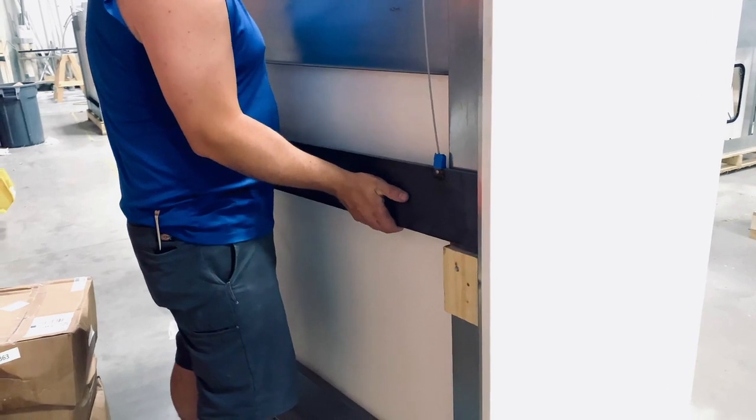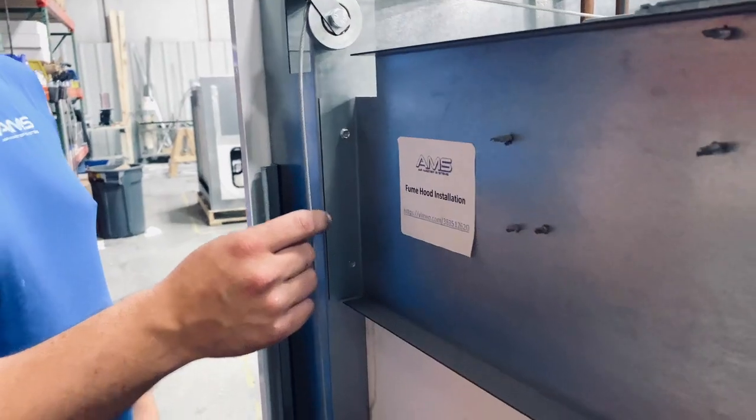The next step will be to make sure you block off the counterweight and make sure it is securely supported. There must be slack in the chain or the cable.